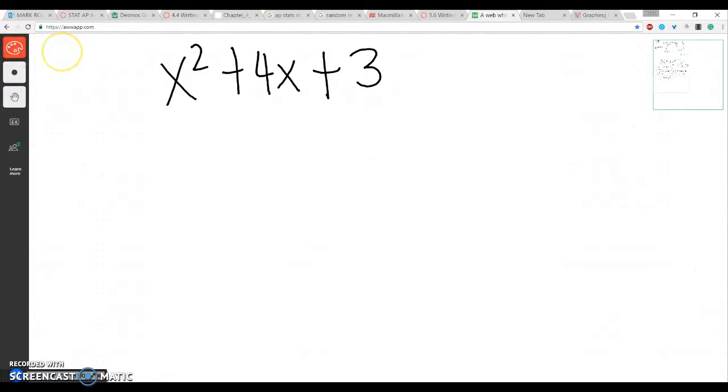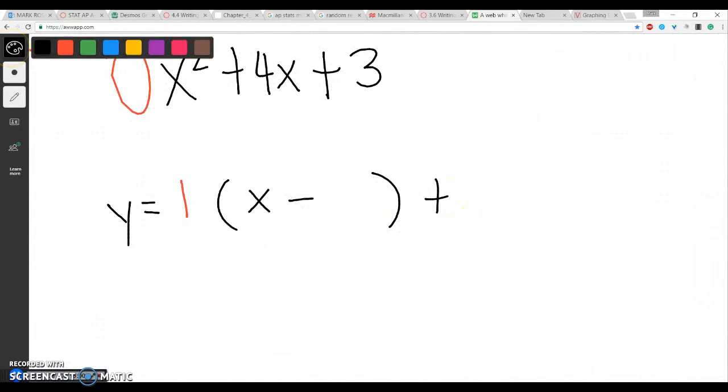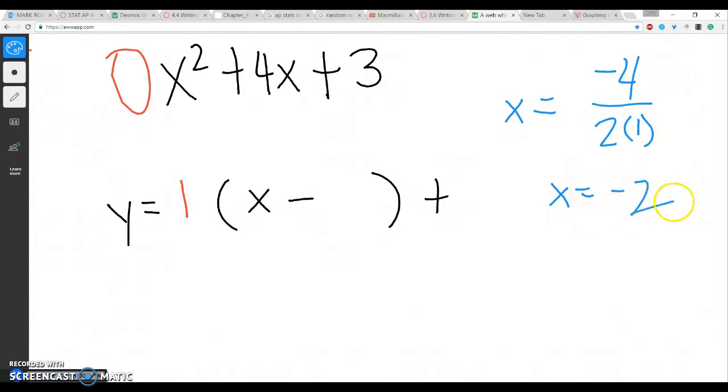This time I don't have a number in front, so I would make my slope, in this case, 1. So I'd have y equals 1(x minus) and then plus out here. So let's figure out what our x-value is. Our x-value is negative 4 divided by 2 times 1, which x would then be negative 2. So I would put that in here. Forgot my squared term.